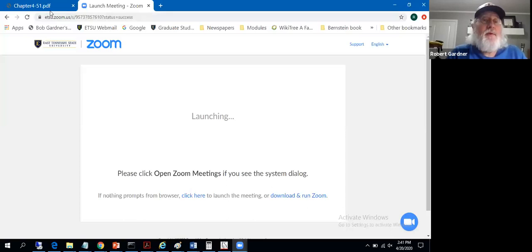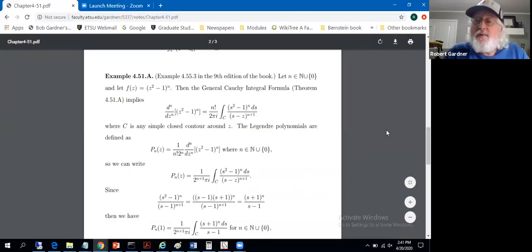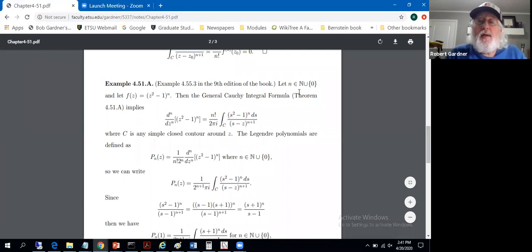Okay, another example with the general Cauchy integral formula. Let n be a non-negative integer, natural number is zero. We're defining f of z to be z squared minus one to the nth power.